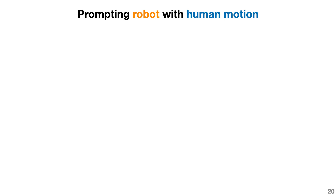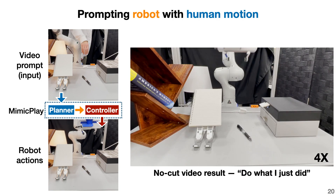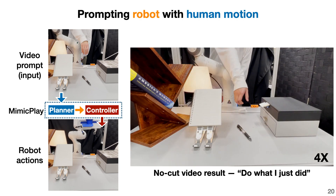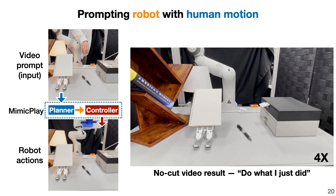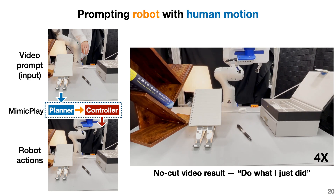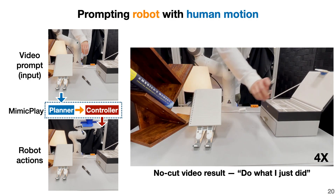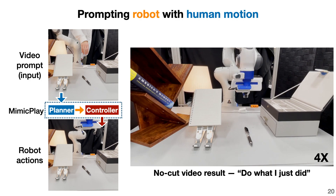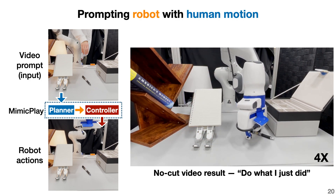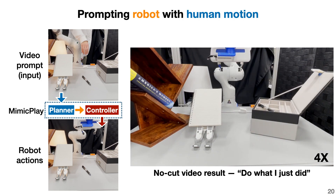Since the high-level planner is learned with human play data, it allows us to prompt robot manipulation directly from a one-shot human motion video. Here is a no-cut video result where in each round, the human demonstrates a task. We then record the human video, sample a goal image from it, and send these goal images into the MimicPlay framework, letting the high-level planner generate the latent plan to guide the robot to reproduce the human motion. We found that prompting with human motion retains competitive performance compared to prompting with oracle robot videos. We believe this could be an interesting interface in the future for prompting robot motion.